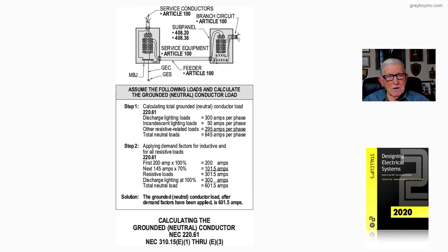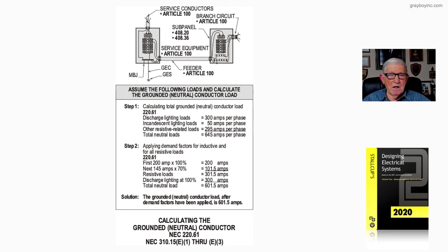A demand factor can only be applied to resistive loading. So in step two under 220.61, we separate the resistive and inductive loading. The first 200 amps of the resistive load is taken at 100%, which is 200 amps. The next 245 amps is taken at 70%, giving 101.5 amps. Adding those two resistive loads together gives 301.5 amps. The discharge lighting must be taken at 100%, which is 300 amps.